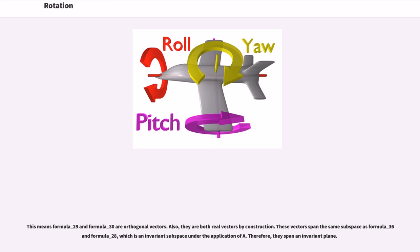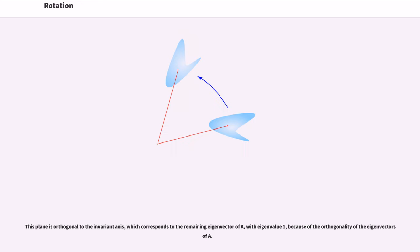Therefore, they span an invariant plane. This plane is orthogonal to the invariant axis, which corresponds to the remaining eigenvector of A with eigenvalue 1, because of the orthogonality of the eigenvectors of A.